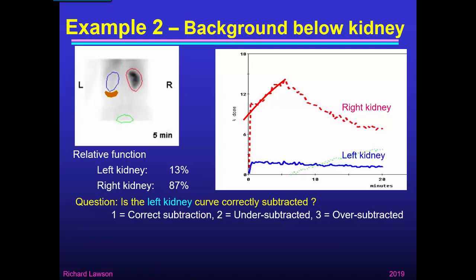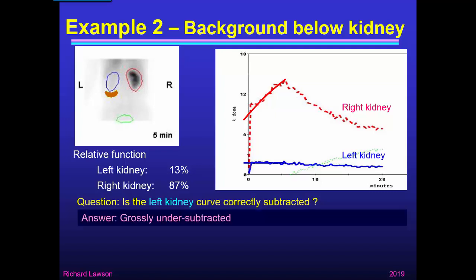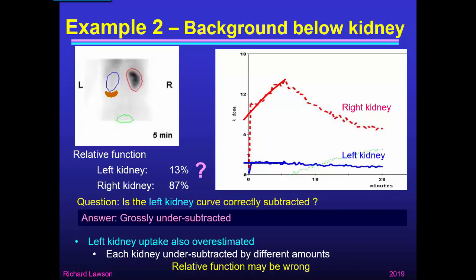What about the left kidney — the blue curve? I think that if we see a kink very early on and then extrapolate that part of the curve, we end up with something which is still grossly undersubtracted — there's still plenty of blood left, because it starts above zero. So we've overestimated the uptake in the left kidney as well as in the right kidney. But each one has a different amount of excess blood background, so the relative function may well be wrong because we've included different amounts of blood in each kidney.